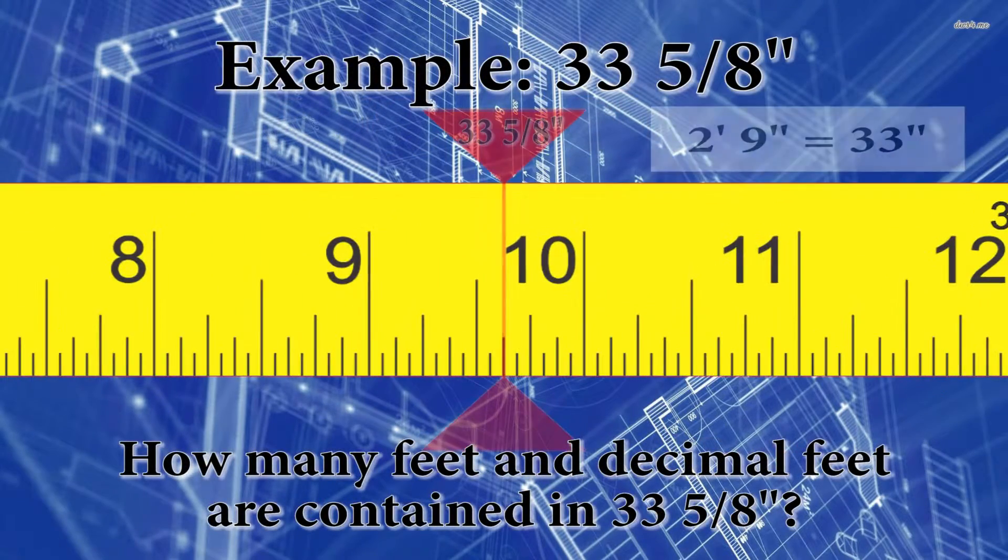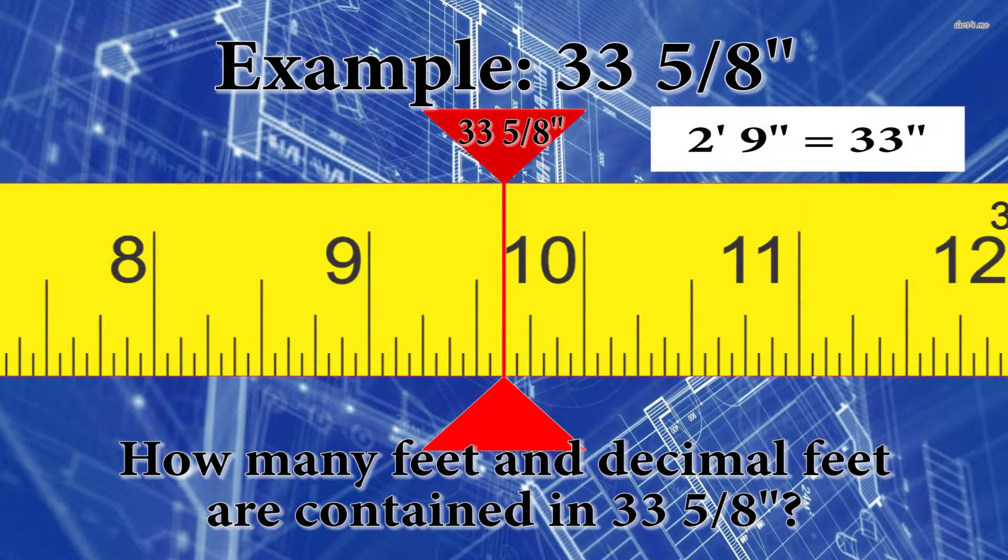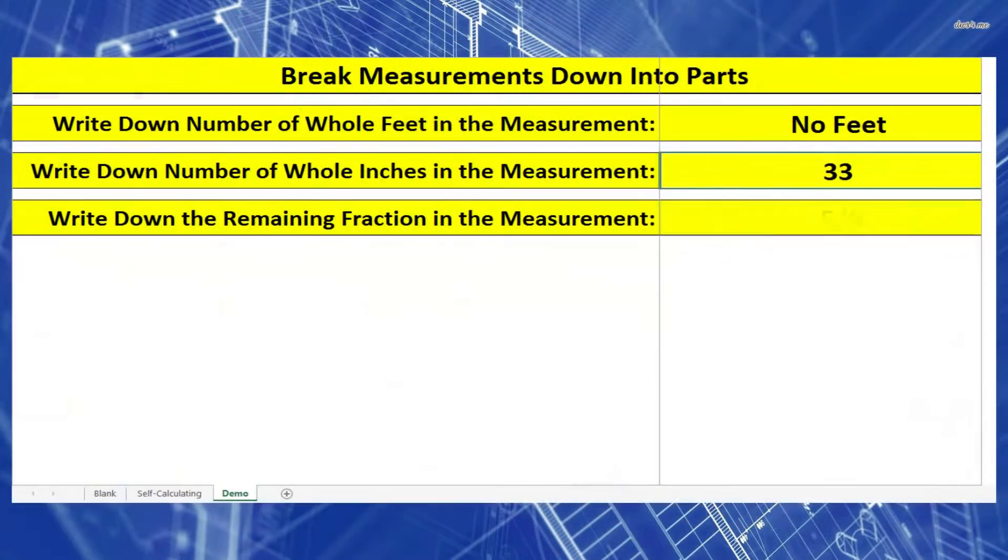So our first example will be 33 and 5 eighths inches. We're going to take our inches and our fractions of an inch and write them separately on a piece of paper.